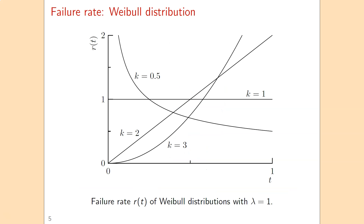We can also put this in a graph. For a Weibull distribution with lambda equal to 1 and various values of the shape parameter k, we see that if k is smaller than 1 the failure rate is decreasing, if k equals 1 it is constant over time, and if k is larger than 1 it is increasing. The higher the value of k, the faster the failure rate increases, and the larger the benefits of preventive maintenance.